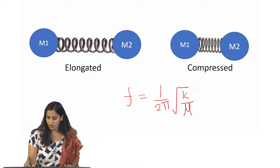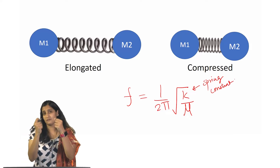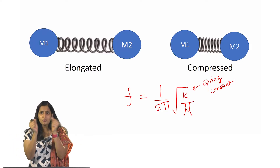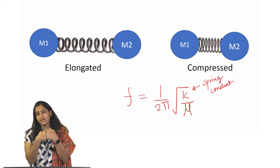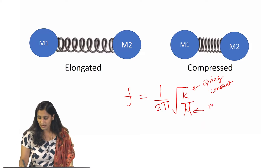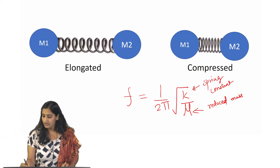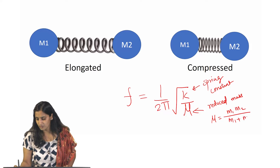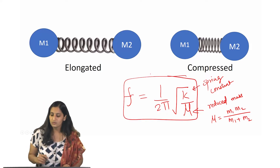Where k is the spring constant — this really has to do with the construction of the spring, whether it is made of metal or plastic. Depending on how strong the spring is, it changes the spring constant. The stronger and tighter the spring, the higher the spring constant. And μ is the reduced mass. If we are talking about two masses m1 and m2, μ = m1·m2 / (m1 + m2). So f = 1/(2π) × √(k/μ), or simply f ∝ √(k/μ).